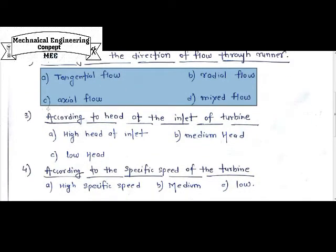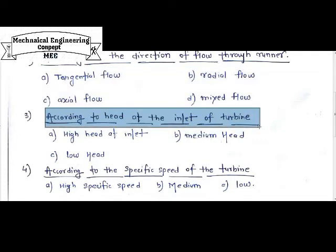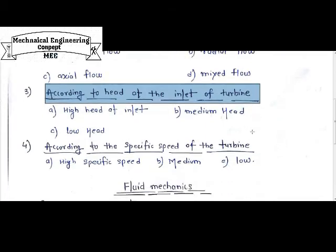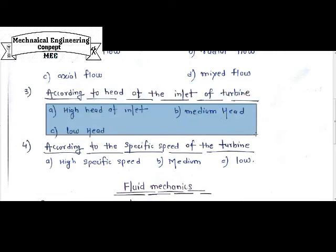The third type is according to the head at the inlet of the turbine — the different head ranges at which flow enters the turbine. There are three basic types: high head at the inlet, medium head at the inlet, and low head at the inlet.